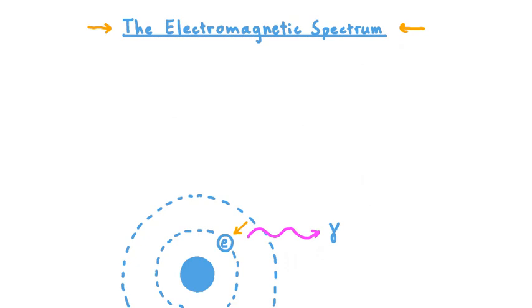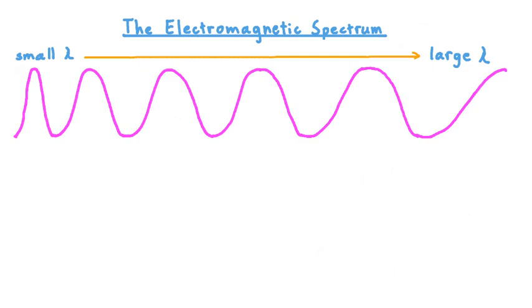This spectrum is the collection of all electromagnetic radiation possible. At one end of the spectrum, we have light of a very small wavelength. And then, as we move from left to right, the wavelength of light involved gets larger. Notice we're using the Greek letter lambda to represent wavelength. This waveform is meant to represent all different wavelengths of light.